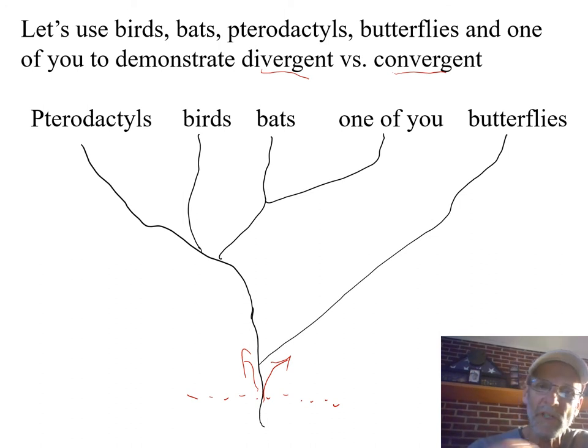The processes of speciation evolution resulted in these five kinds of animals. One's extinct now, pterodactyls, the rest are around here. And what the evidence is for that divergence is the similarities that these things have. Homologies.